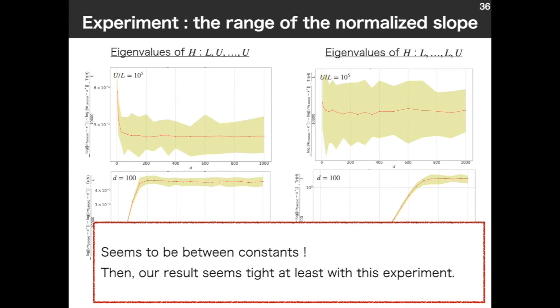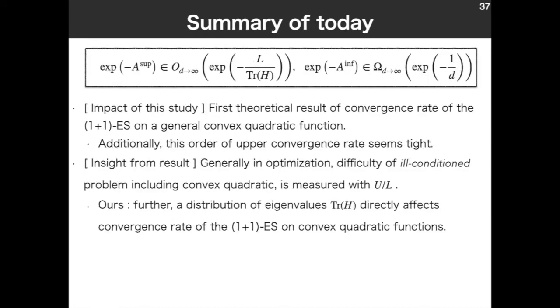This is summary of today. The impact of our study is its first theoretical result of convergence rate of the (1+1)-ES on a general convex quadratic function. In addition, this order of upper convergence rate seems to be tight, as we see experimentally. Insight from our result is, generally in optimization, difficulty of ill-conditioned problem, including convex quadratic, is often measured with U/L. Our result goes further, namely, a distribution of eigenvalues, tr(H), directly affects convergence rate of the (1+1)-ES on a general convex quadratic function.